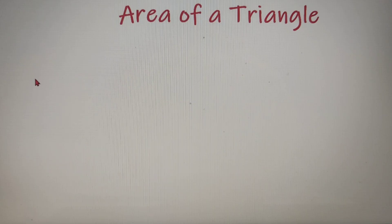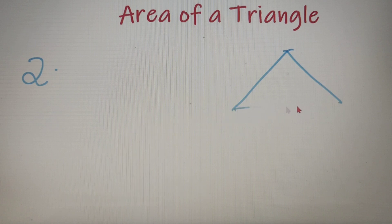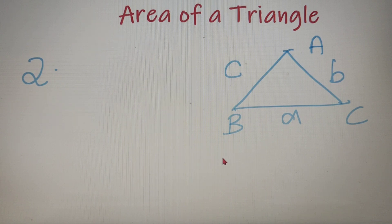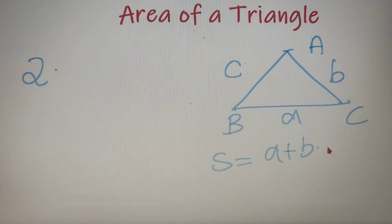The second method that we will use for calculating the area of a triangle is Heron's formula. So let's say we have a triangle and we can name it as A, B and C. Now the length of BC is equal to A, that of AC is equal to B, and that of AB is equal to C. Now first we have to calculate the semiperimeter, which is equal to half of the perimeter. So the semiperimeter S is equal to A plus B plus C divided by 2.